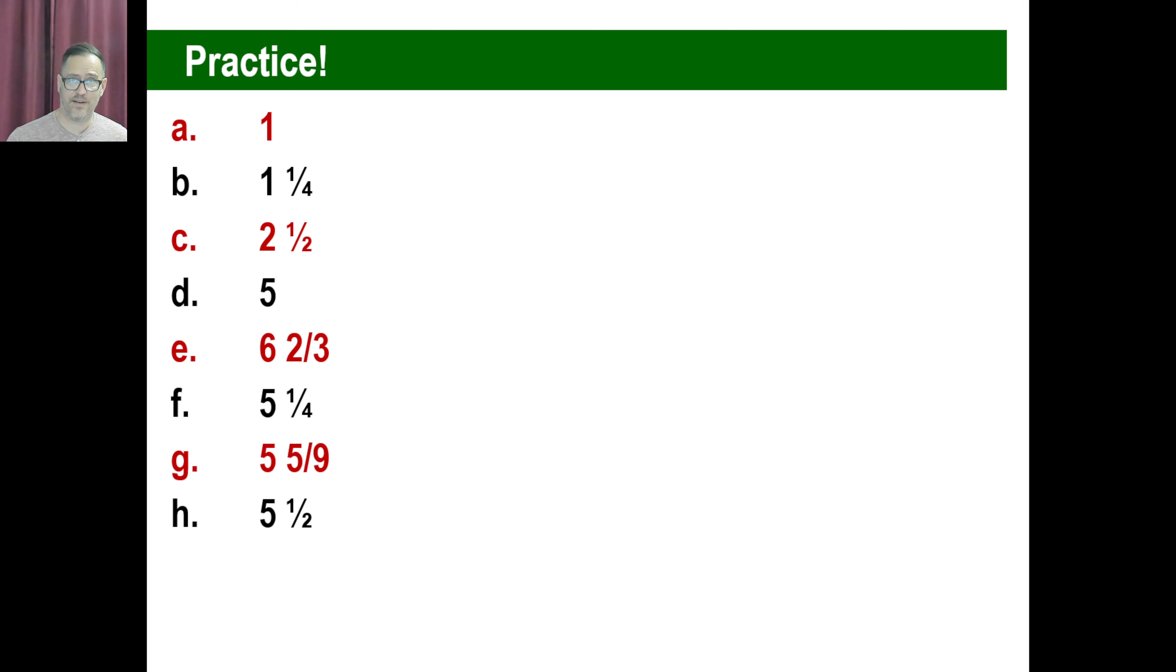Pause it and try H. That'll be five and a half. Last one. Pause it and try I. And, of course, that's just seven. Two over one times seven over two. The two is getting knocked off. And then you have seven over one as your answer. Have a great day. Knock out the problems and see you next time. Take care.